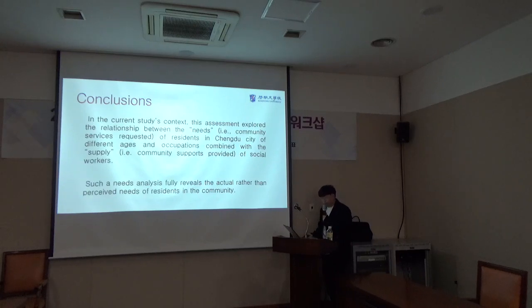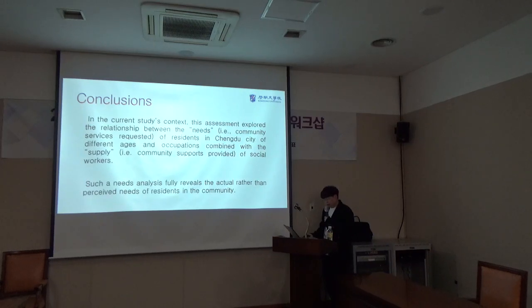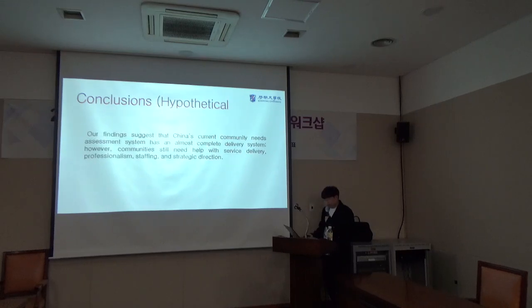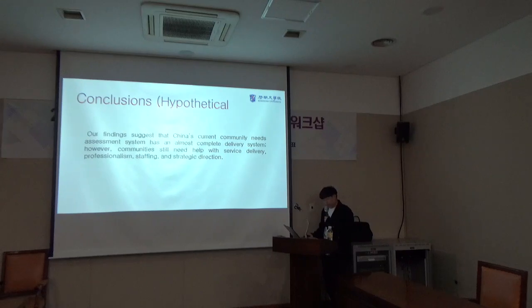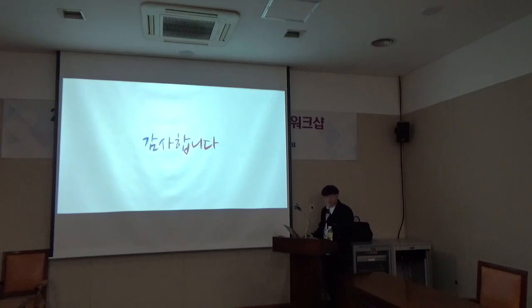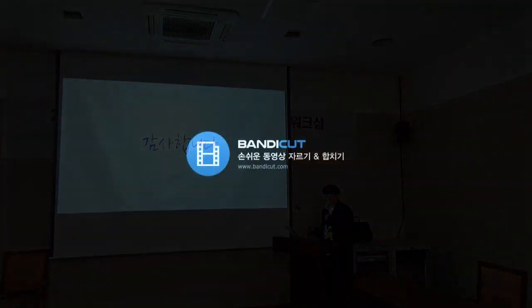This assessment explores the relationship between the needs of residents in Chengdu city of different ages and the cooperation combined with the supply of civil workers. The findings suggest that the Chinese community needs assessment system has the most competent delivery system. However, communities need help with service diversity, delivering professional staff, and strong policy direction. Thank you all.